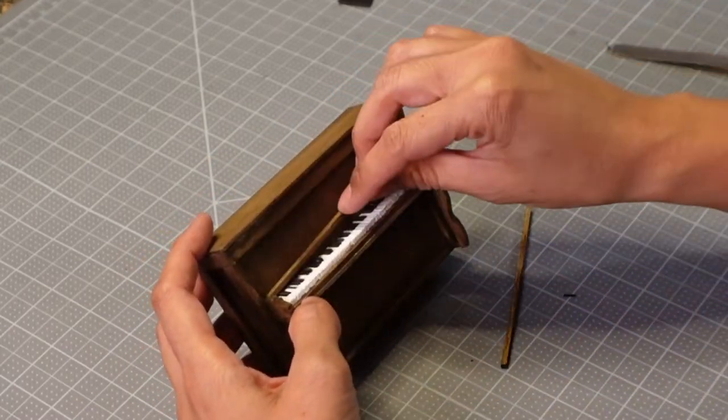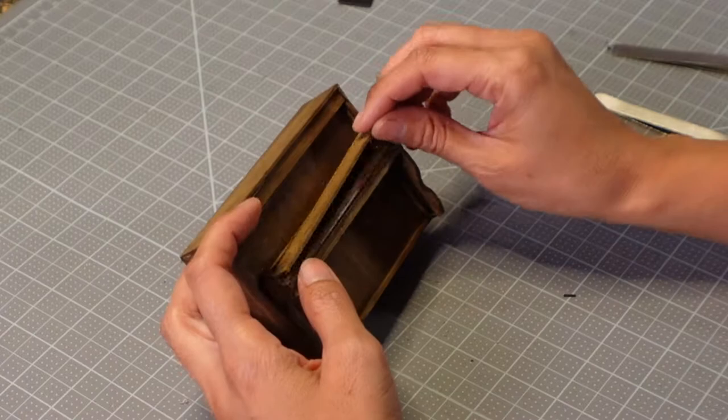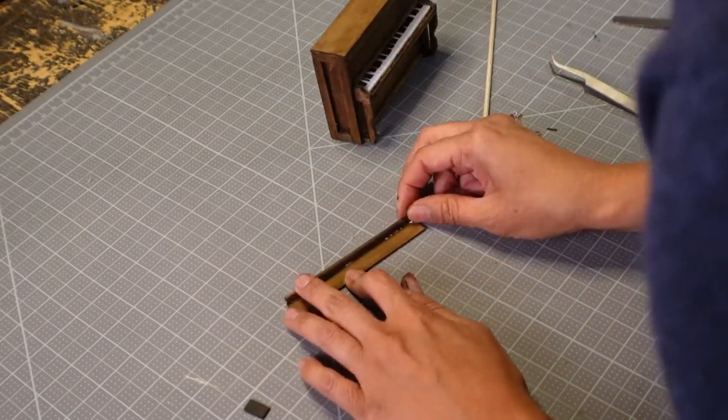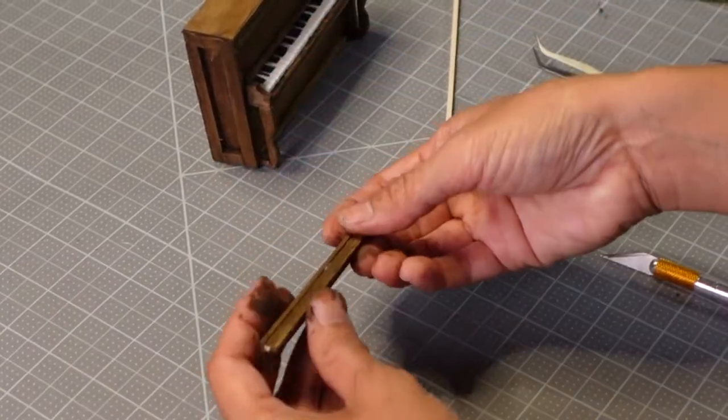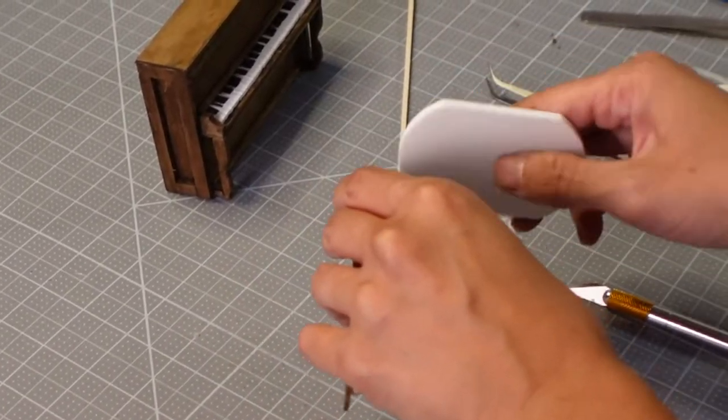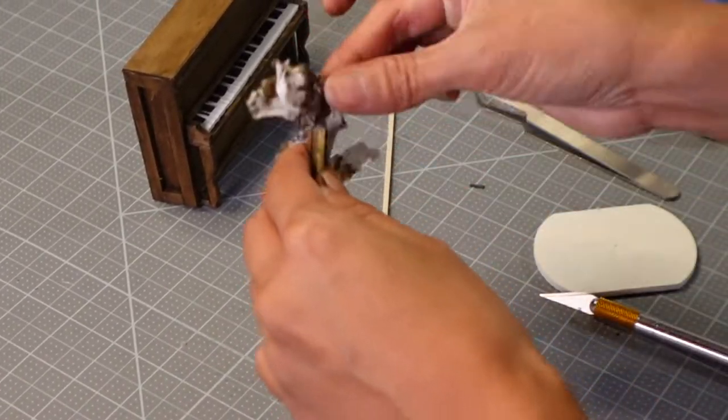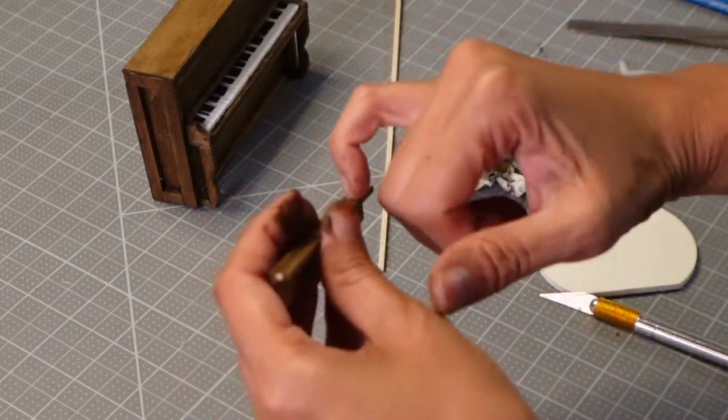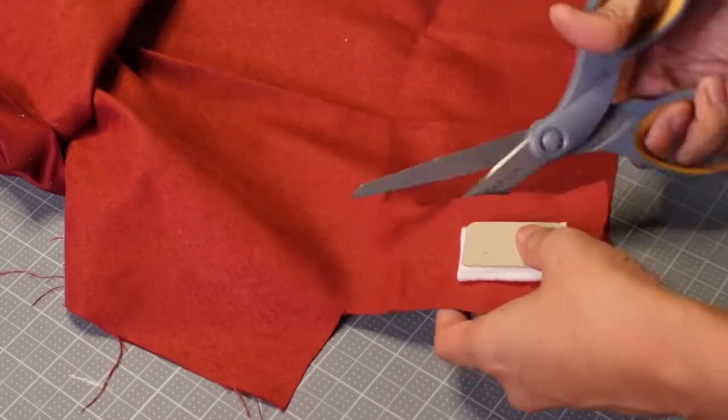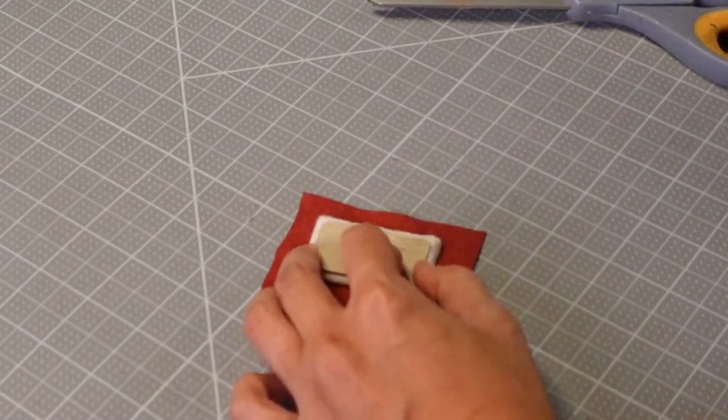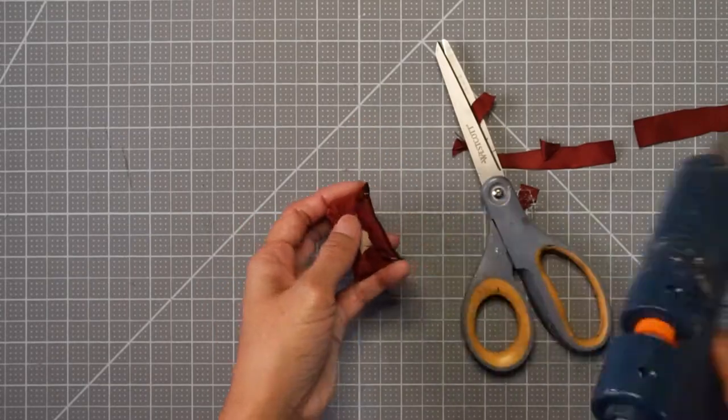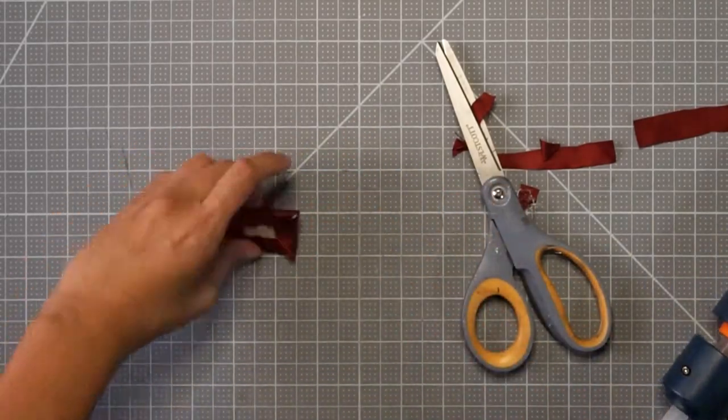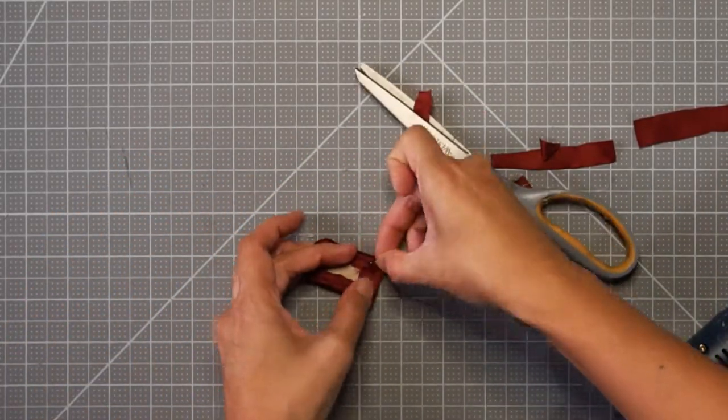And finally, the cover for the piano keys. And here I'm just doing a quick and simple, very dirty job of upholstering the seat for the chair. I really love this silk fabric, and I think it looks really good with this piano.